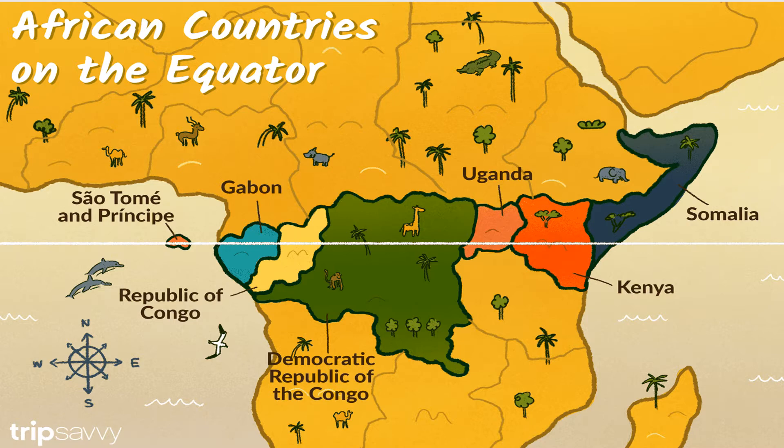First, I am going to discuss with you the location of the country. The Democratic Republic of Congo is located on the western side of the African continent. The equator passes through the northern part of this country.